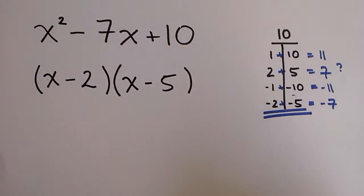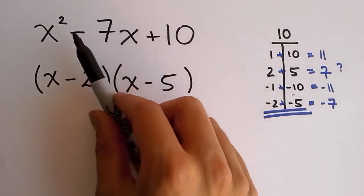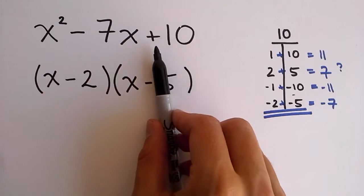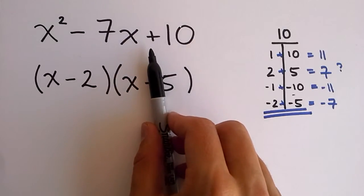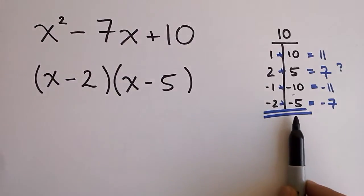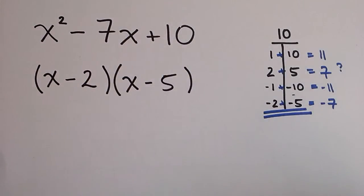Pretty much a tip for this is that whenever you see a negative sign, either in the second or in the third terms of your quadratic expression, you always need to check out the negative factors of your constant term.